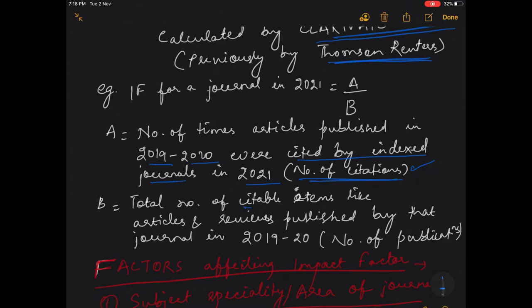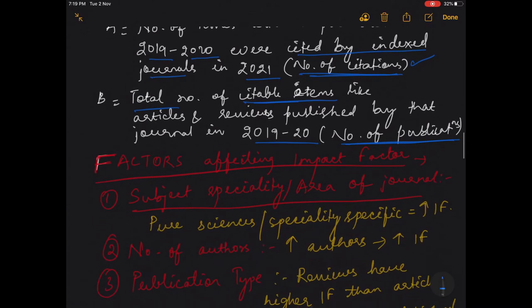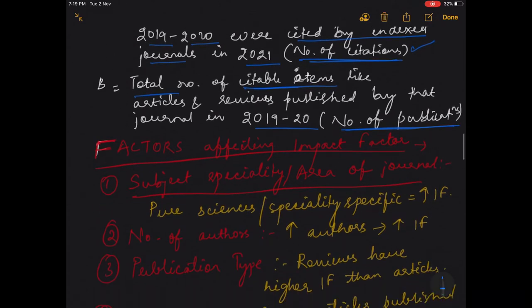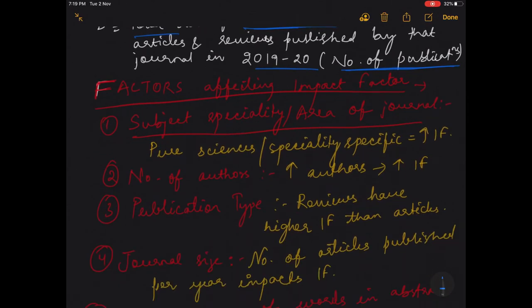Whereas B is the total number of citable items like articles and reviews published by the journal in 2019 and 20. So that is the number of publications. Number of citations divided by number of publications gives you the impact factor of a journal in that current year. Now what are the factors which affect the impact factor?